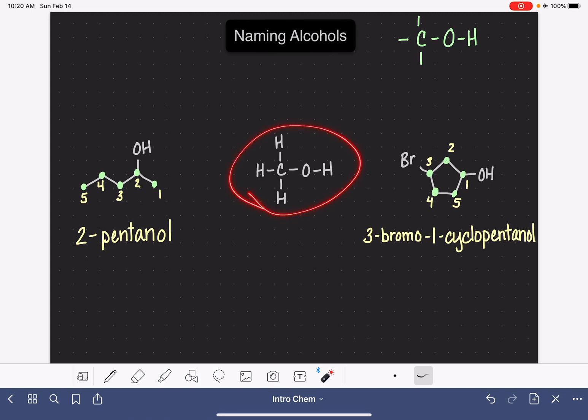Here's our last example, and this one is so simple that it's kind of tricky. Our first job always is to find the longest carbon chain, but there's only one carbon atom in this molecule. It's not really that much of a chain. Our second job is to number the carbon chain, but again, there's only one carbon atom in the molecule, so it kind of doesn't make sense to number the carbon chain.